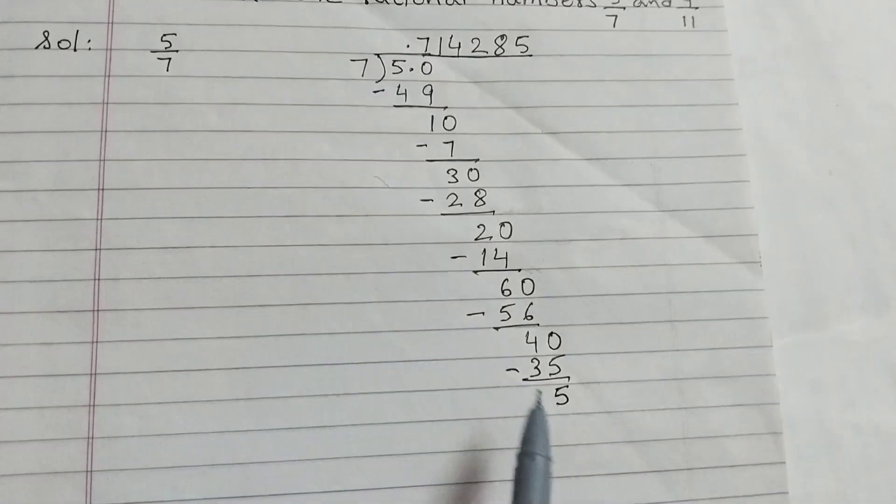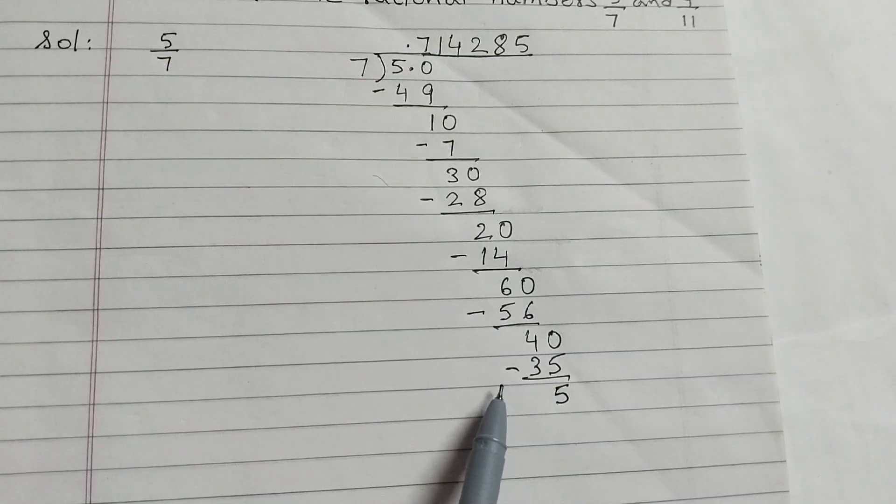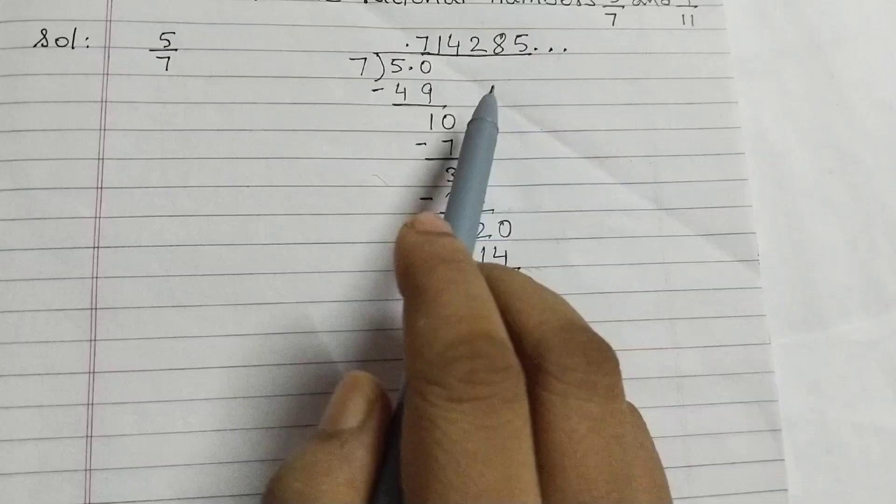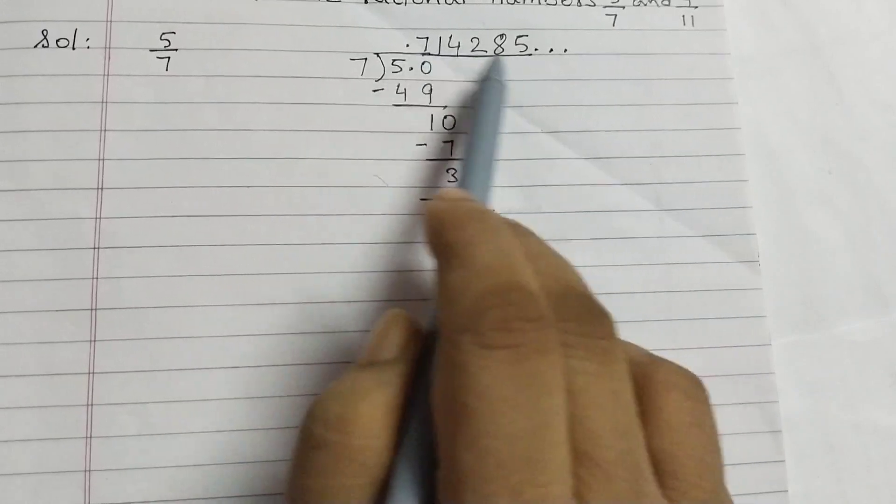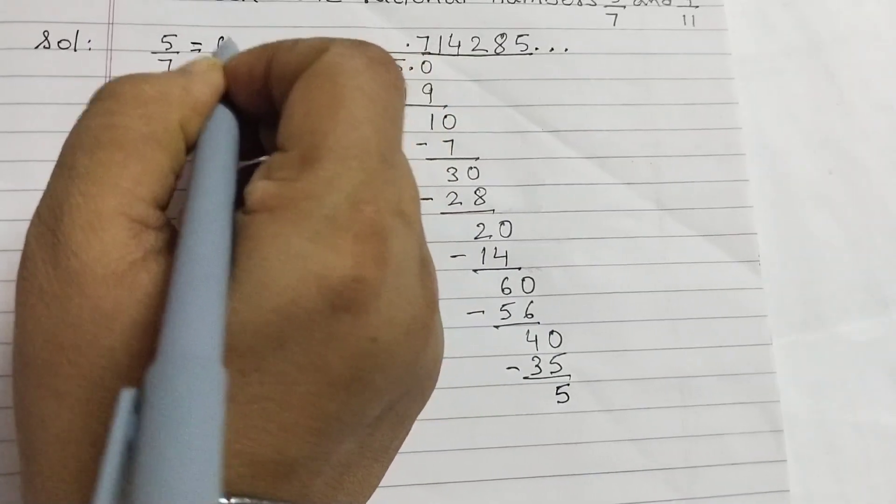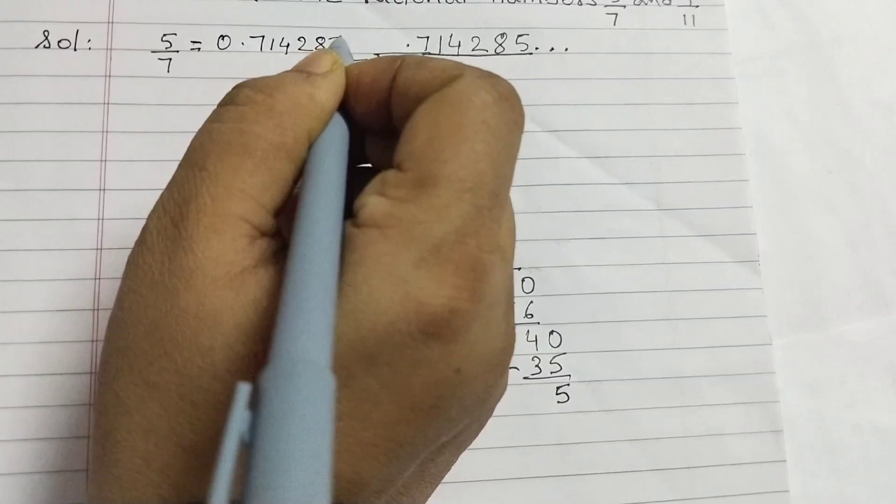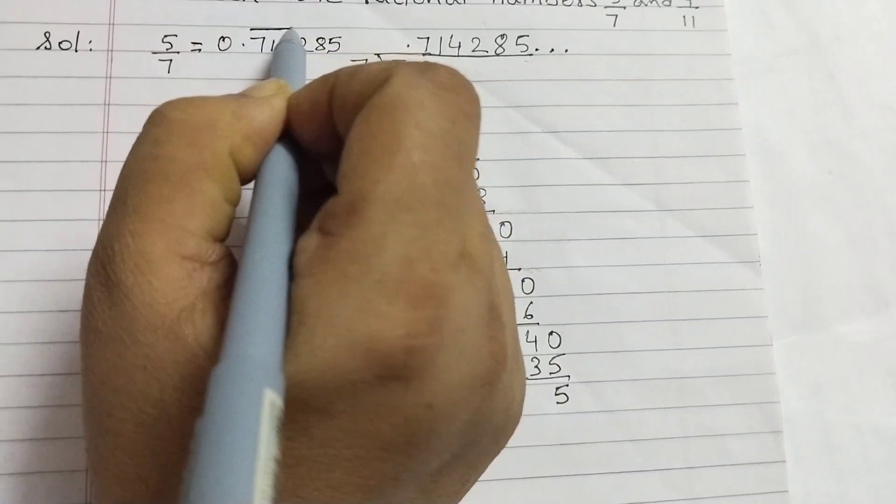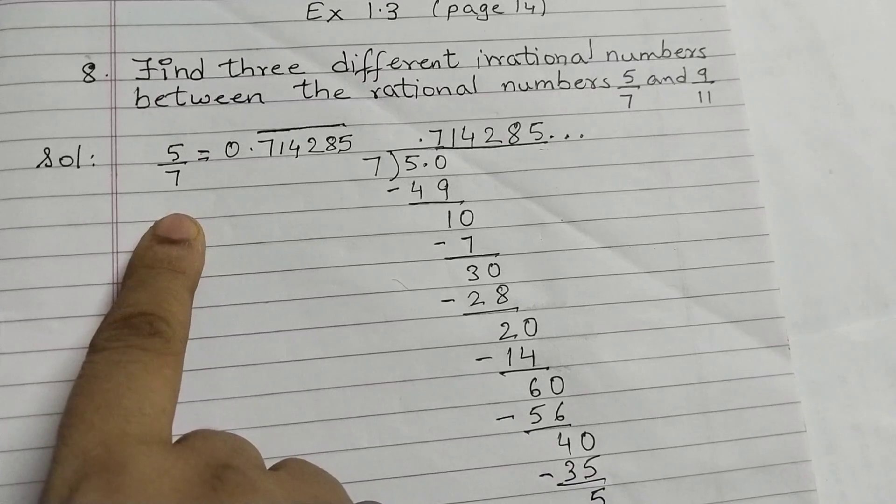So we started with 5 and we got a 5. That means the same division pattern is going to repeat. So we are not going to do that. We will just put dot, dot, dot, dot which means this division will go on forever and this block is going to repeat itself. So we can write this as 5 by 7 is equal to 0.714285 and since this is going to repeat itself, we will put a bar on top of this, 6 digits. That is the decimal expansion of 5 by 7.